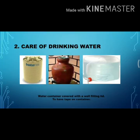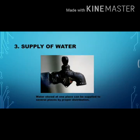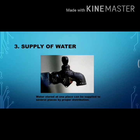The next point is supply of water. Water stored at one place can be supplied to several places by proper distribution. For this purpose, huge tanks are installed on the roof or terrace of a building. Pipes are fitted to the tank, and water is supplied to kitchens, toilets, and bathrooms of different houses. These tanks are made of cement or plastic, with taps fitted on the pipes so people can use water according to their needs.